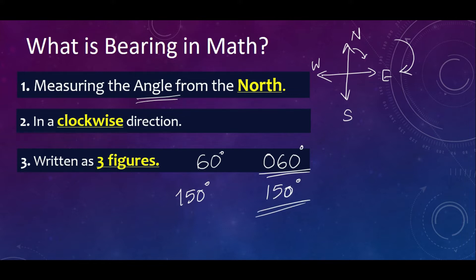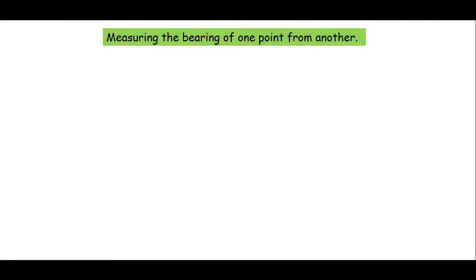So moving on to the first level one question, measuring the bearing of one point from another. Now the question says what is the bearing of B from A? Let me bring the figure for you. You have two points here and first you should have the line connecting A and B and then you draw the north at each of these points at A and at B.